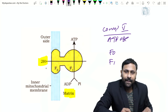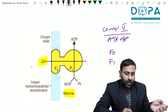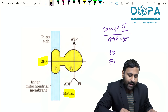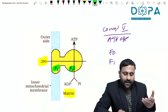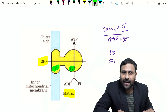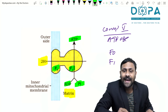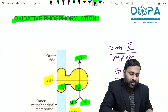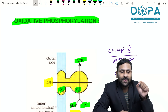Protons move from the inter membrane space back to the matrix through F₀ to F₁. As the protons move, energy is released, which activates the enzyme ATPase. As a result, ADP combines with inorganic phosphate to form ATP. This type of ATP synthesis is called oxidative phosphorylation, which is linked to the Electron Transport System.